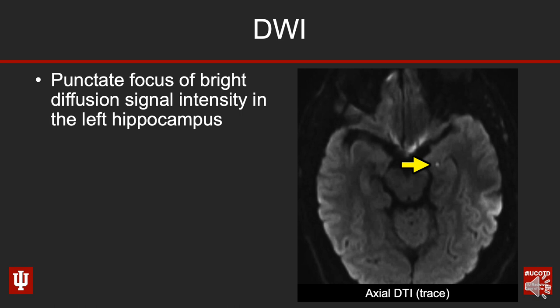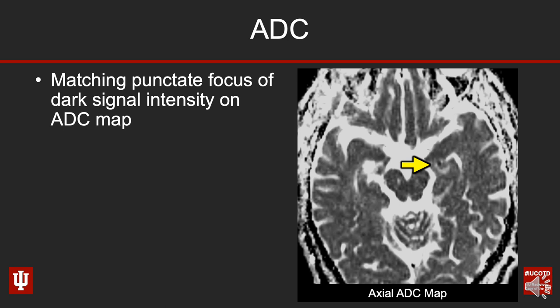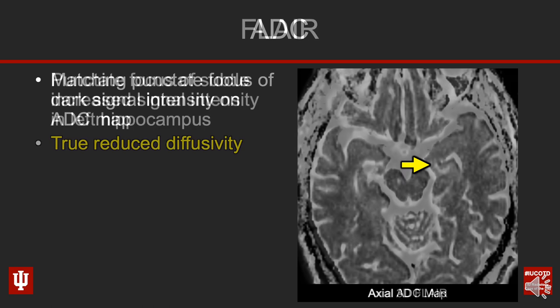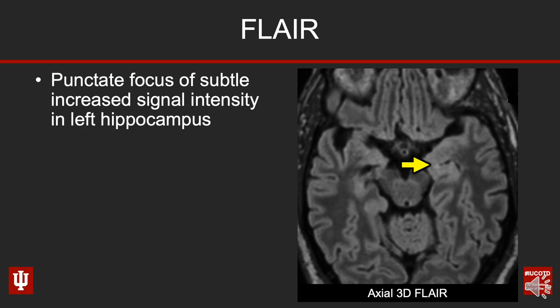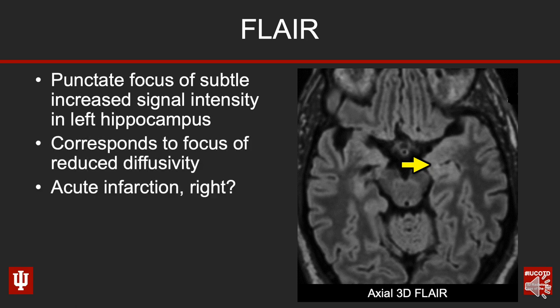Now if we look on the ADC map, we can see that there's matching punctate decreased signal intensity. So this is diffusion bright and ADC dark — this has true reduced diffusivity. And if we look on the FLAIR imaging, we can see that there's just a little tiny amount of increased FLAIR signal intensity right here at the tip of the yellow arrow, corresponding with the area of reduced diffusivity.